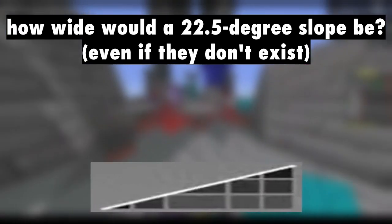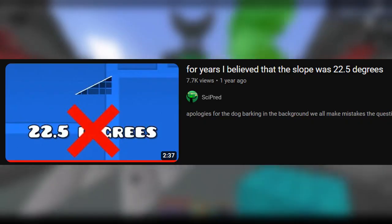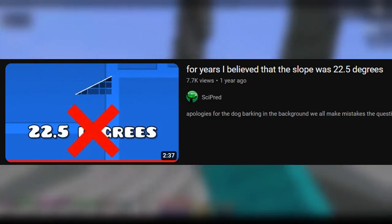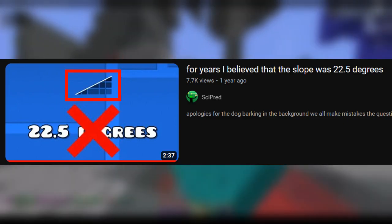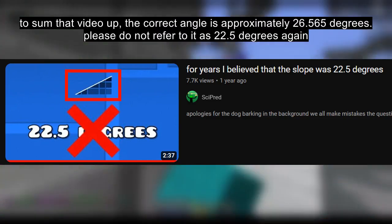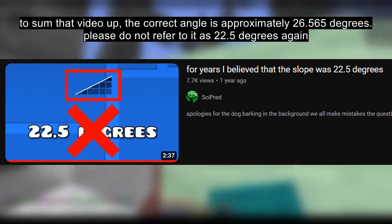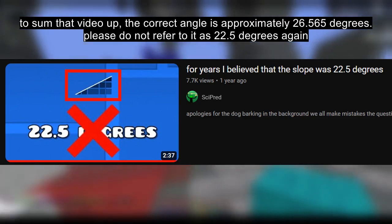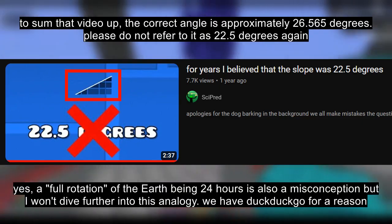How wide will a 22.5-degree slope be? I've already discussed the shocking truth a long time ago about these slopes in particular. None of their angles are 22.5 degrees and it's all a common misconception. I'd even say it's more of a misconception than a day being 24 hours. But what if they were actually in the game?